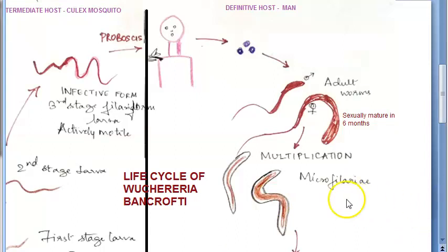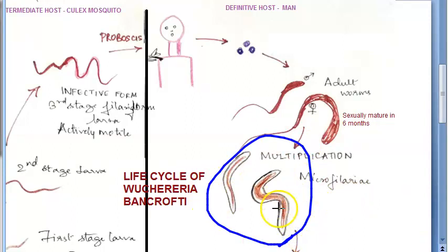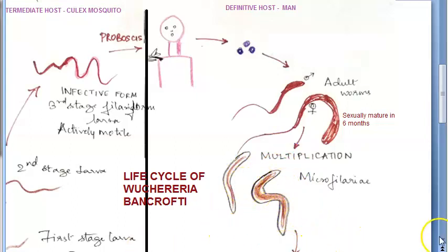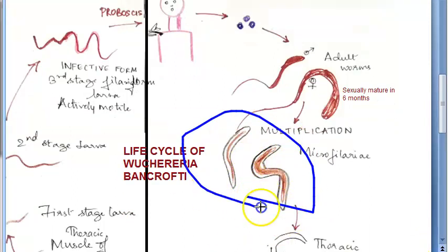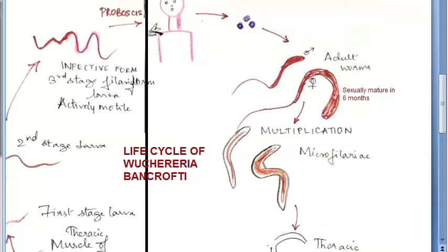The structure of this microfilaria is very interesting. There is a sheath — this black color you see is a sheath, and inside it you have the larva. We can explain the structure of this microfilaria — how to distinguish the microfilaria of Wuchereria bancrofti from the microfilaria of other worms. That is also important, but we will come to that later. For now let's not get deviated with the structure of microfilaria.